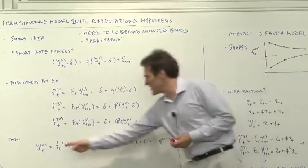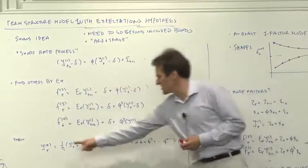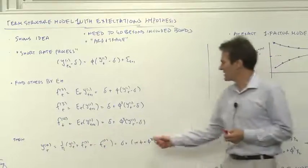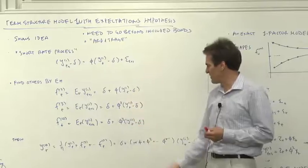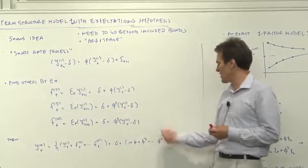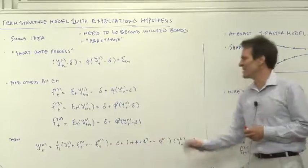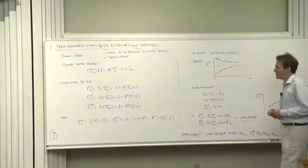Once you got the forward rates, the yields are easy to find. The yield is just the sum of the forward rates up to that date, or it's a little more complicated. Instead of phi, phi squared, and phi cubed, you have phi plus phi squared plus phi cubed, and so on and so forth. And you'll see expressions like these as we get to fancier and fancier models.